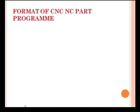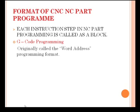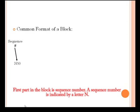Now let us discuss the format of CNC NC part program. Each instruction step in an NC part program is called a block. As we already discussed, NC part program is based on G-code programming. The G-code programming originally is called word address programming format. G-code programming processes one line at a time sequentially.